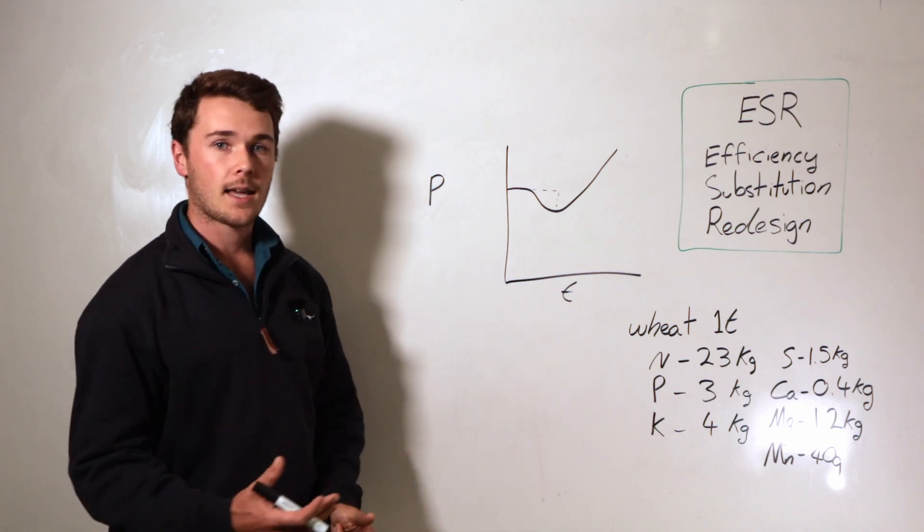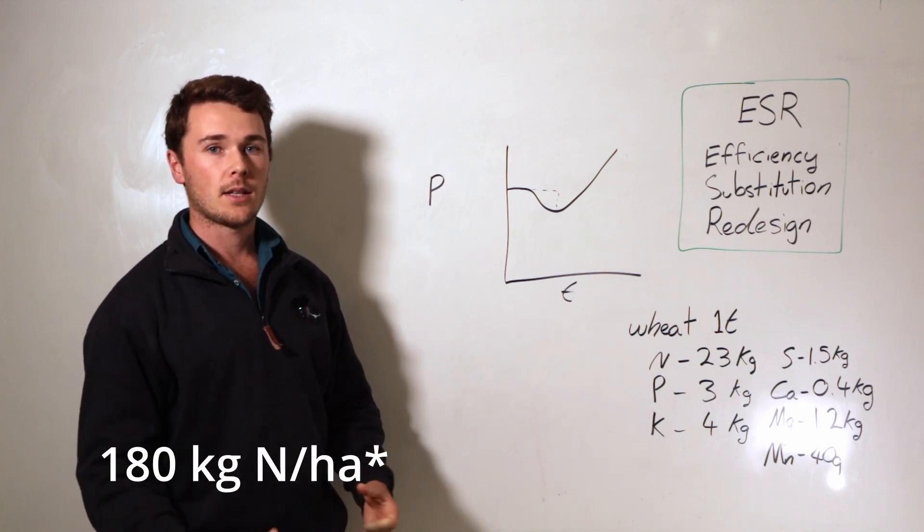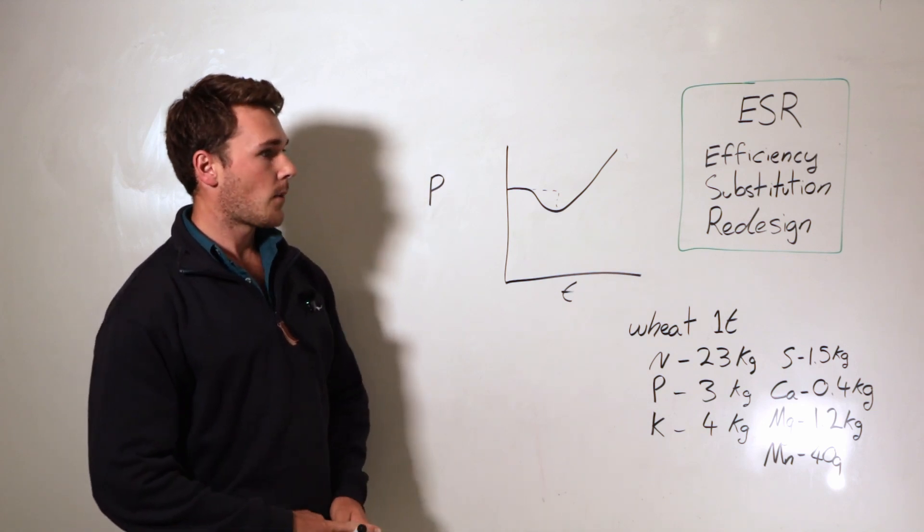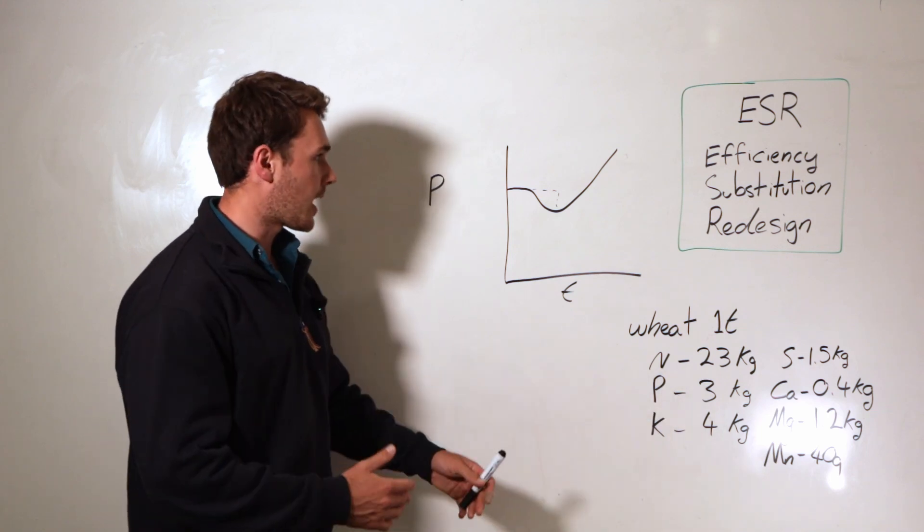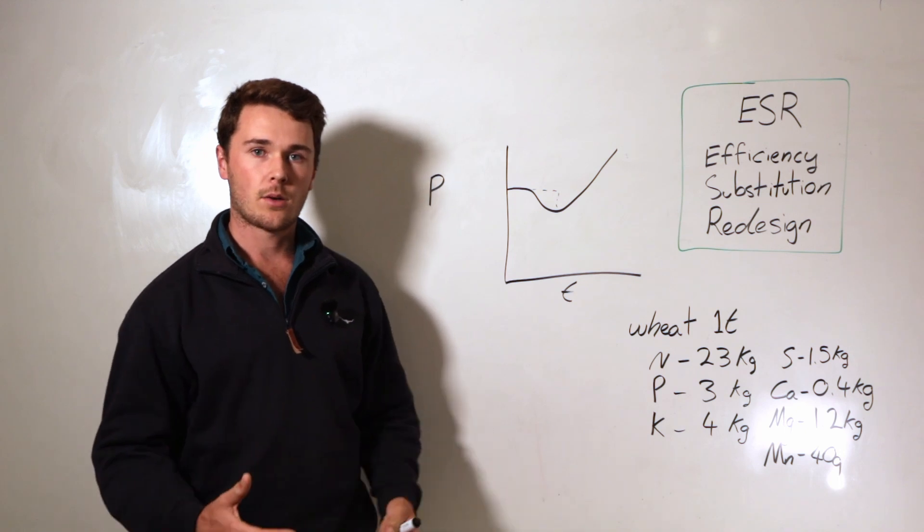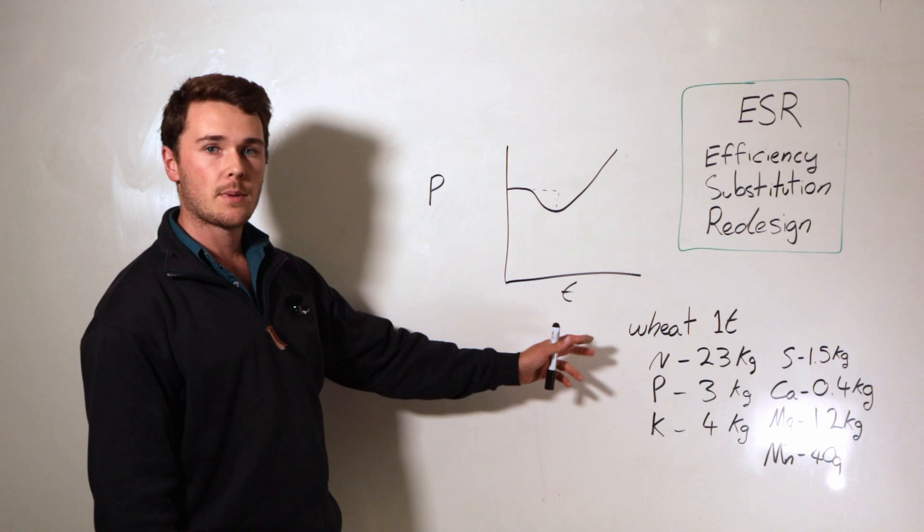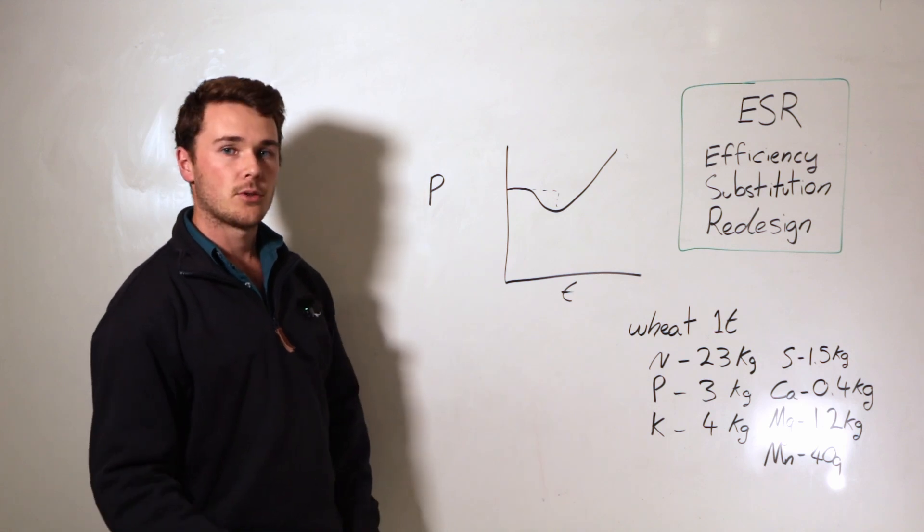So typically you need to be applying 40 kilos per ton of wheat to be able to achieve that. And when we're targeting four and a half tons a hectare, that's going to work out to be 200 kilos of nitrogen. When you just suddenly half that, of course you're going to half the yield. Now a lot of that nitrogen is actually supplied through the breakdown of organic matter and other nitrogen sources in our soil. But still we need to be applying the correct nutrition.